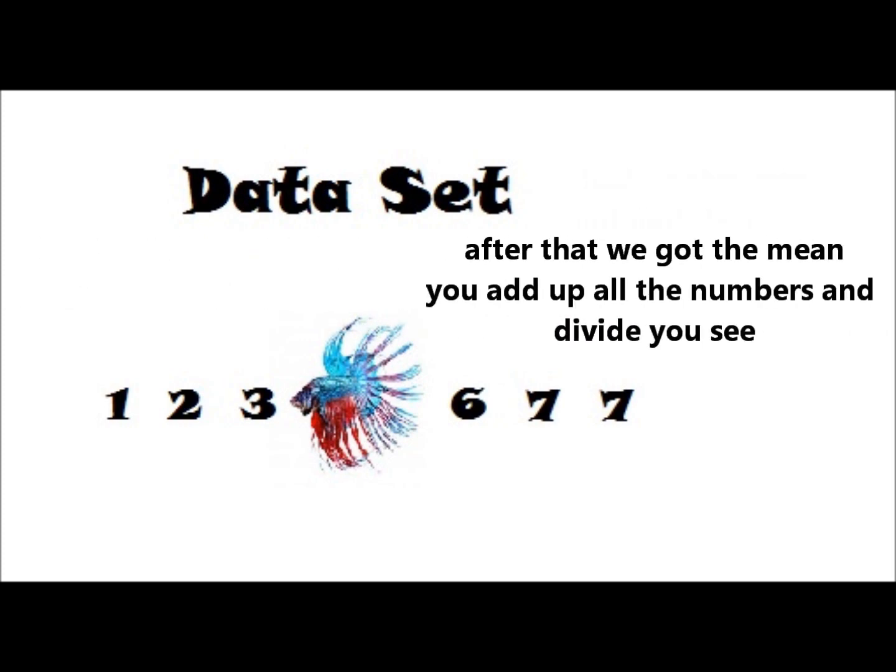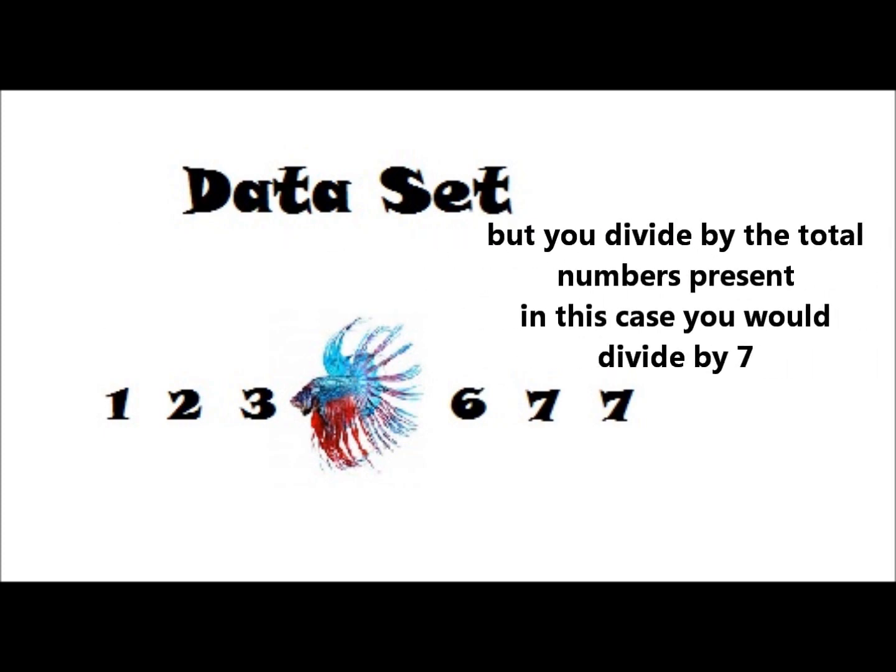After that, we've got the mean, you add up all the numbers and divide you see, but you divide by the total numbers present, in this case, you would divide by 7.